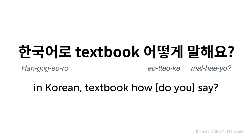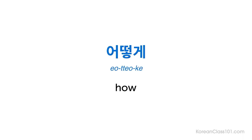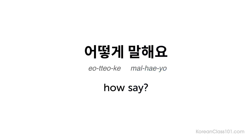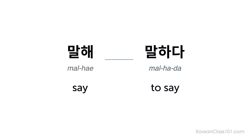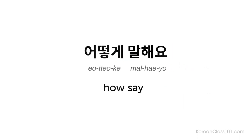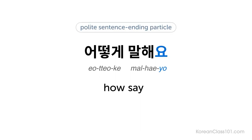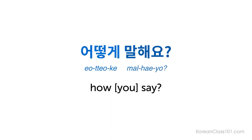어떻게 말해요? First is 어떻게, meaning 'how.' Next is 말해요, meaning 'say.' 말해요 is from the verb 말하다, meaning 'to say.' Last is 요, the polite sentence-ending particle. Together, it's 어떻게 말해요? — literally 'how you say.' At this level, remember it as a set phrase: 어떻게 말해요?